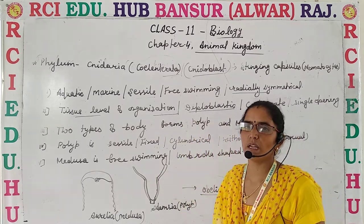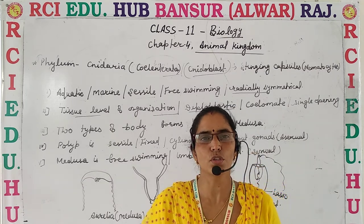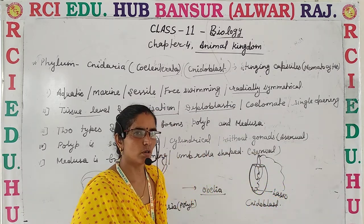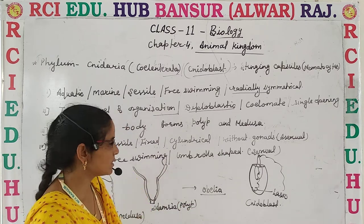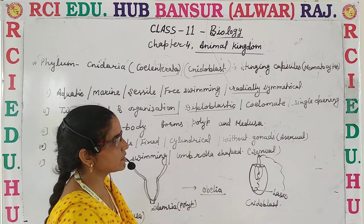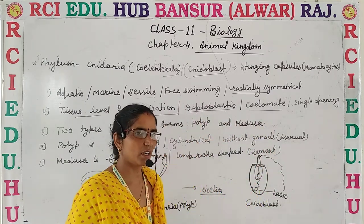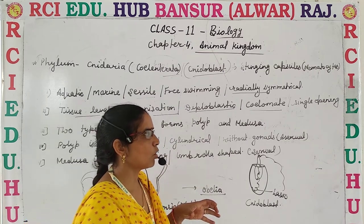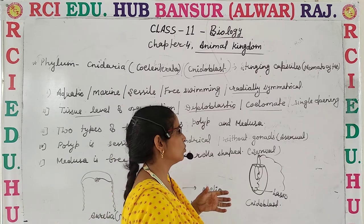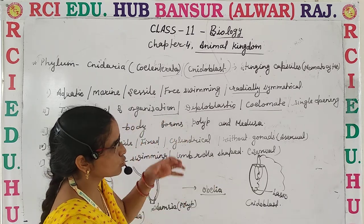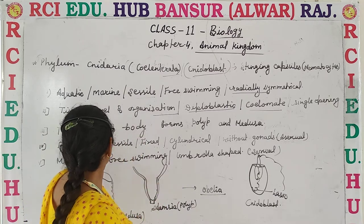Coelenterata is diploblastic, consisting of two germ layers: ectoderm and endoderm. Mesoderm is totally absent; in its place, mesoglea is present. These organisms are acoelomate, meaning they lack a true body cavity. There is a single opening in the body — exit and entry both take place from the same opening, just like a mouth.